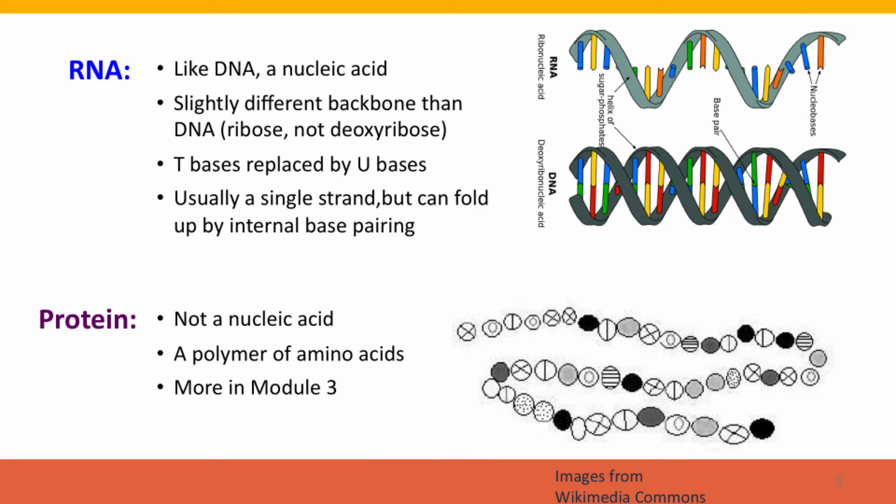Now, protein is a very different kind of molecule. It's not a nucleic acid at all. It's still a polymer, an informational polymer. It consists of subunits that are similar in their ability to form a chain but have different properties, and these subunits are called amino acids. We'll talk a lot more about proteins in Module 3. For now, all you need to know is that the proteins are the enzymes and the structures. Almost all of the working parts of the cell are protein.